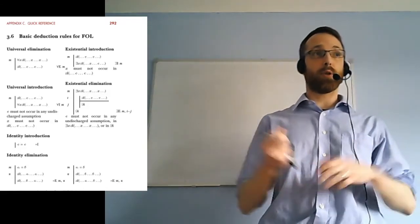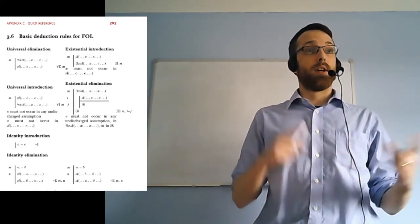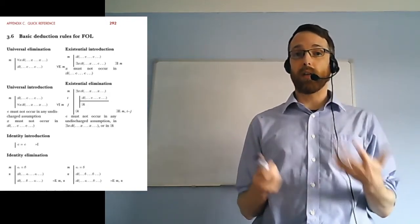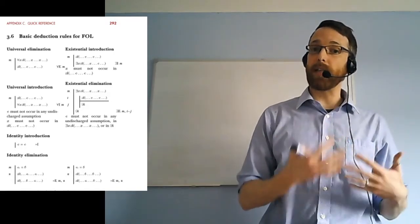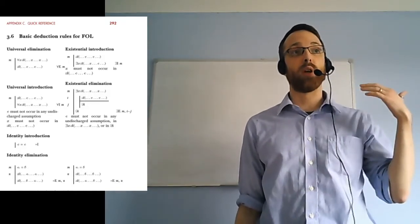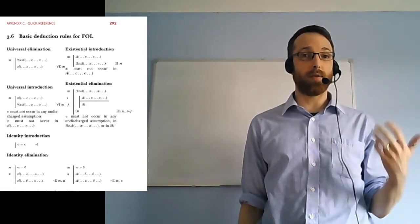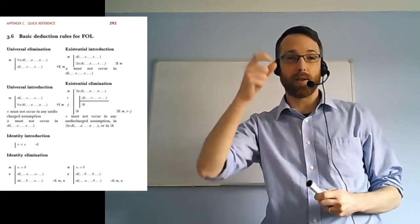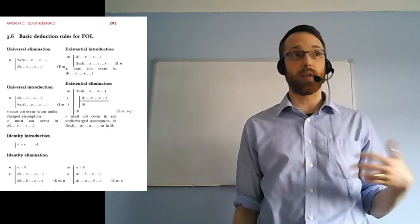Last video we talked about interpretations, which was our tool in FOL for showing that an invalid argument is invalid. The tool we have for showing valid arguments are valid is natural deduction. In this video I'm going to tell you about how we need to expand our system of natural deduction that we had in TFL to FOL. There's nothing radically new — the process is still the same as before, and if you've mastered natural deduction for TFL, you just need to learn a few new rules.